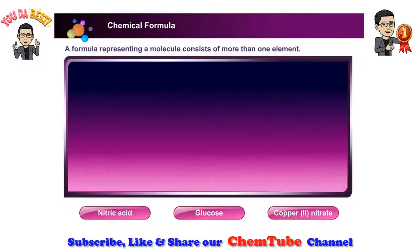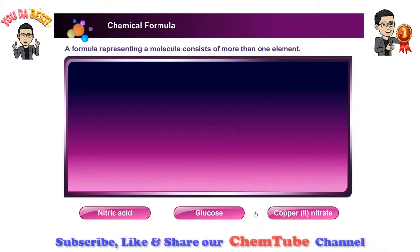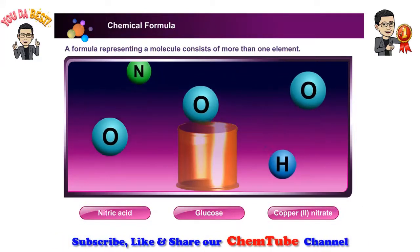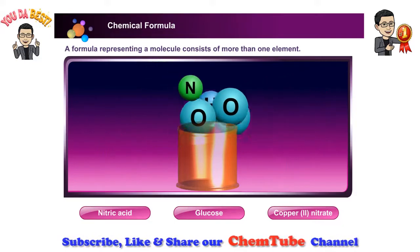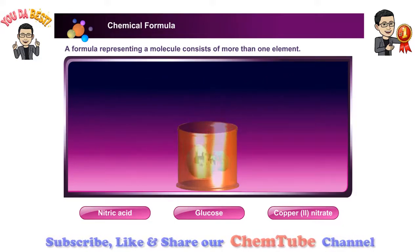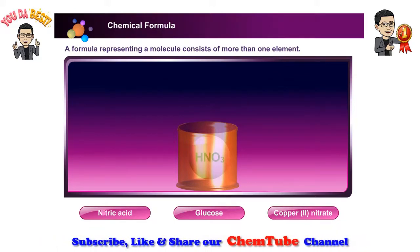Now let's study a formula representing one molecule of a compound. Click on each compound. One molecule of nitric acid consists of hydrogen, nitrogen, and oxygen. The molecule of nitric acid is a combination of one hydrogen atom, one nitrogen atom, and three oxygen atoms.